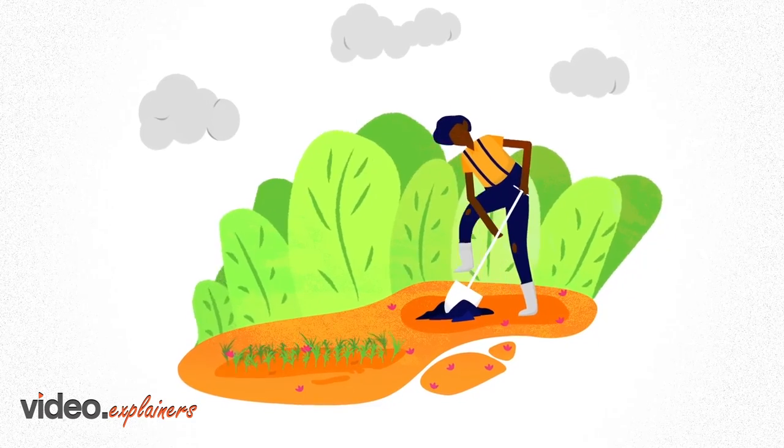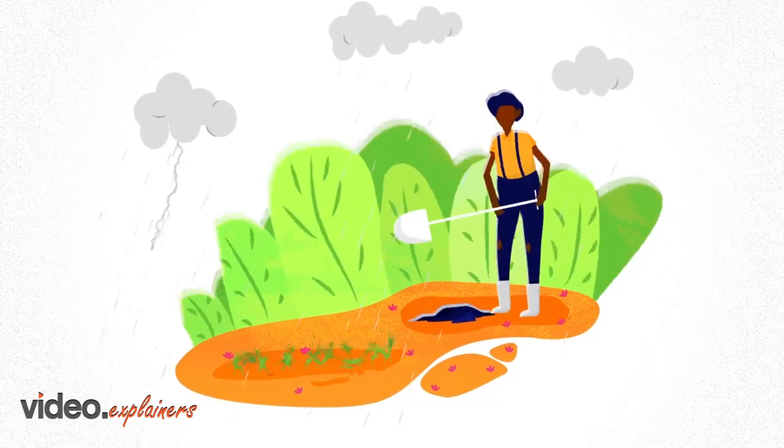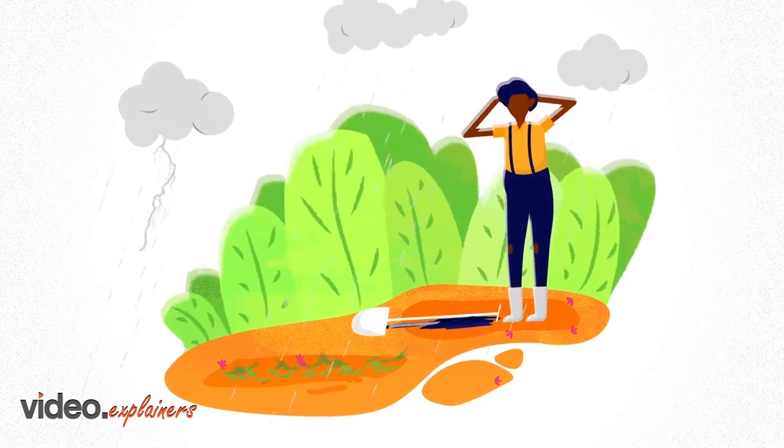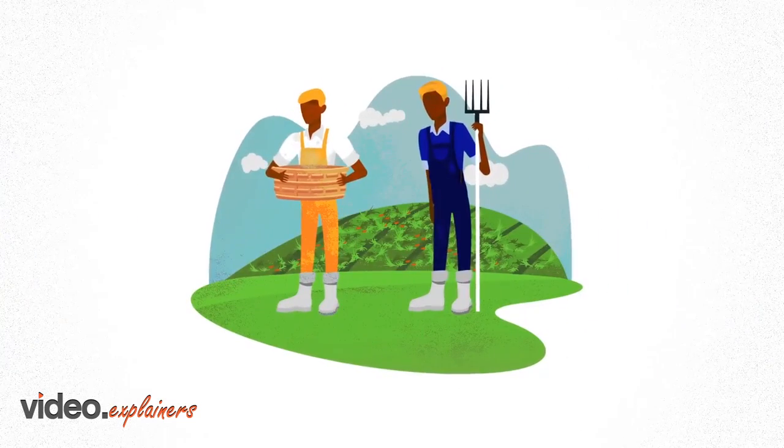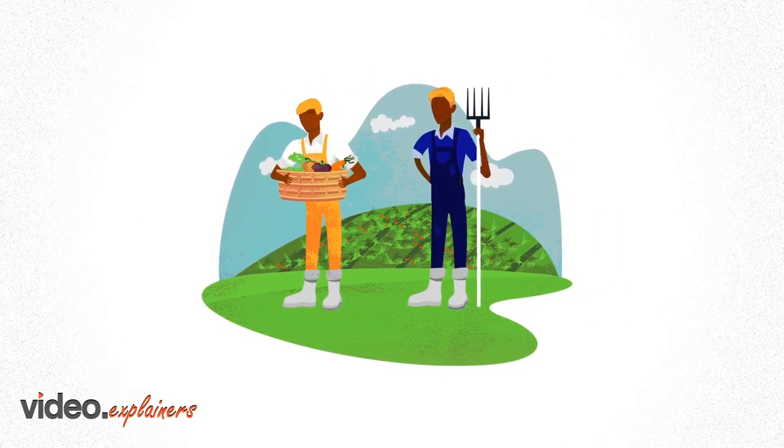Climate change has drastically affected irrigation, wind and weather patterns to make farming a lot more challenging and uncertain. Especially for poorer farmers in isolated regions who regularly suffer bad harvests.